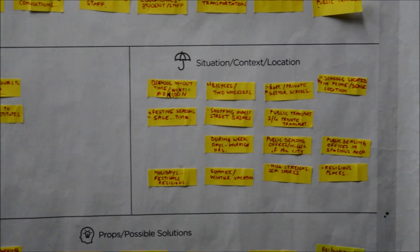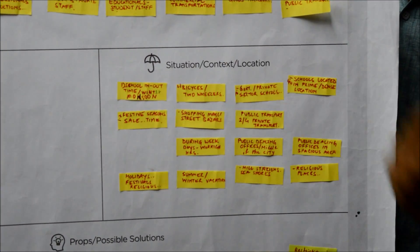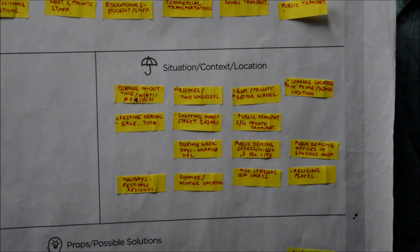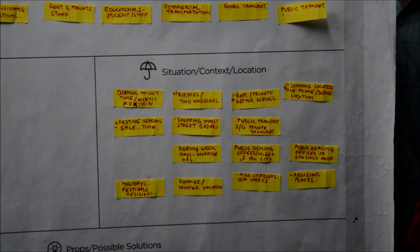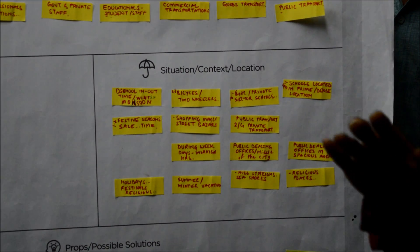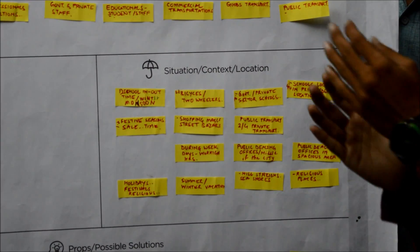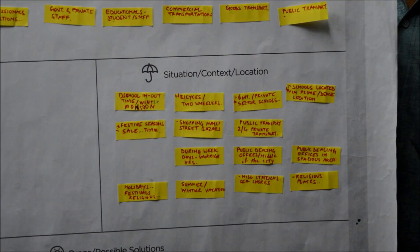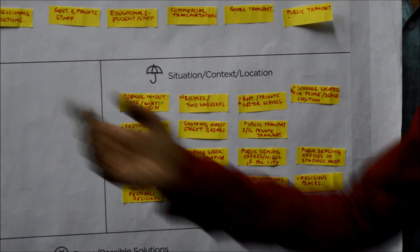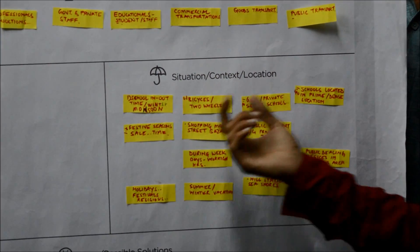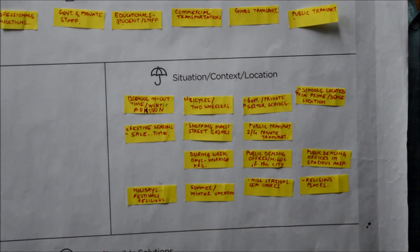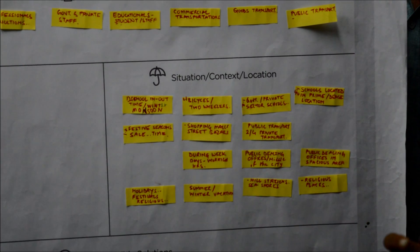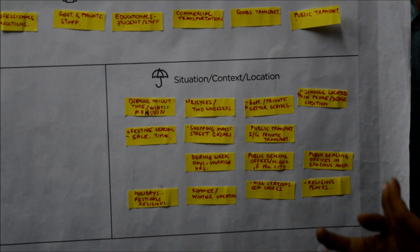Third is situation and location. For example, taking the activity of children going to school — in which situation and location are the children going to school? In situation, we write school in or out time, or winter or monsoon. Location means school, government school, or self-finance school.